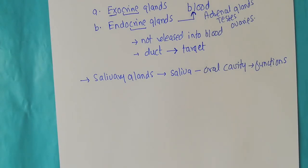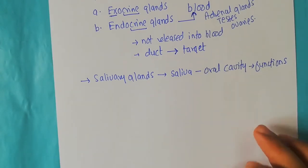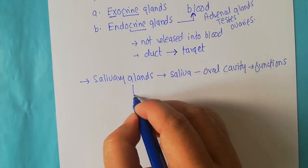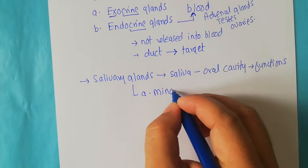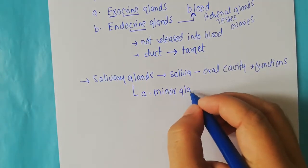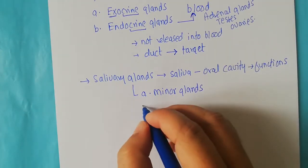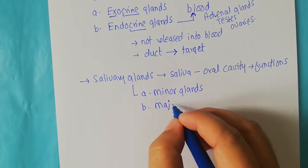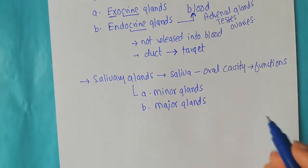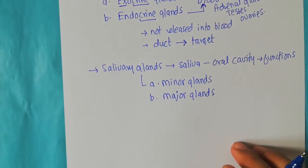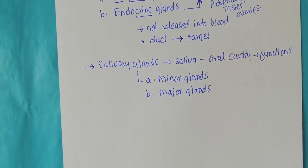The salivary glands are actually divided into two types: the minor salivary glands and the major salivary glands. These are the two major categories of salivary glands found in the oral cavity. We will discuss the minor glands first and then focus on the major glands.